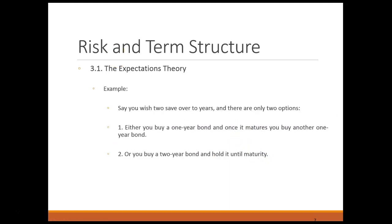To illustrate this, say you wish to invest over a period of two years and have two choices. One, you buy a one-year bond, hold it to maturity, and then use the proceeds to buy another one-year bond, which you hold to maturity again until two years from now. The second option is you buy a two-year bond today and collect interest on this bond twice. We assume there are no transactions costs or similar complications that could induce frictions into this choice.